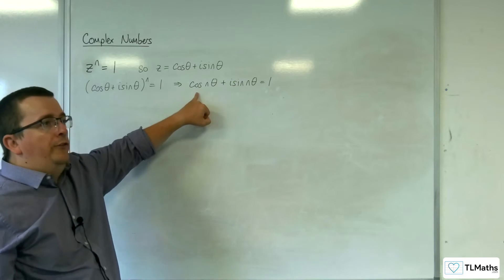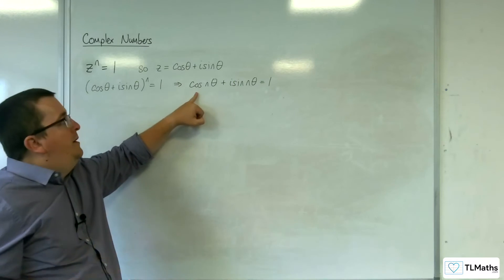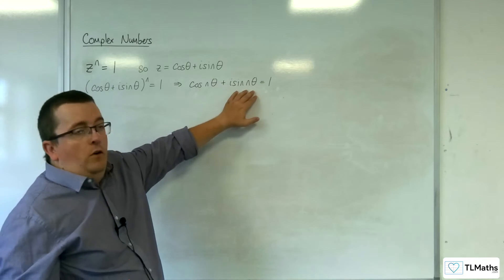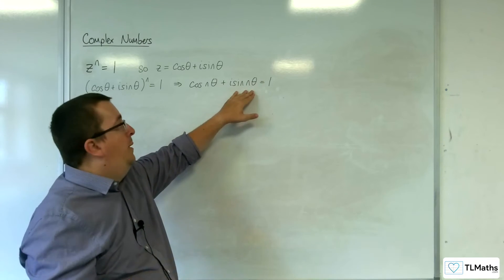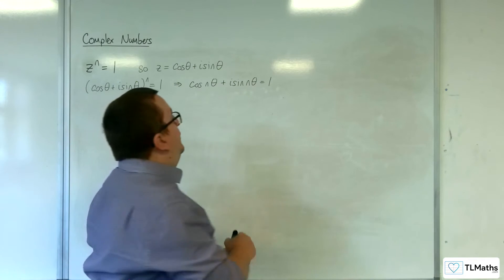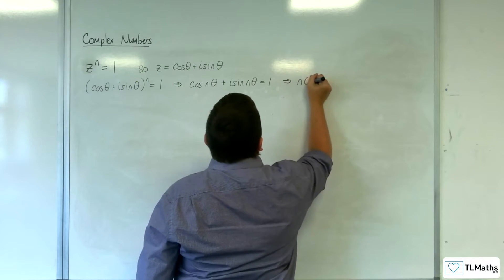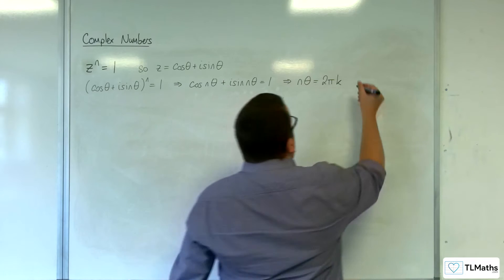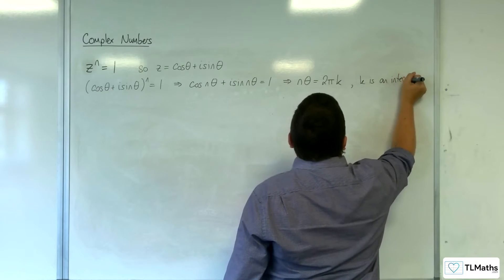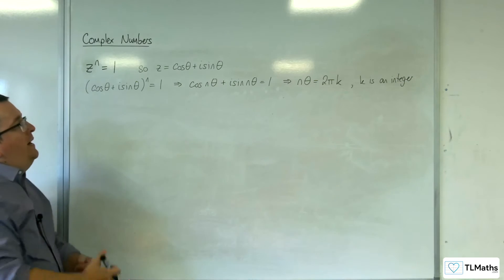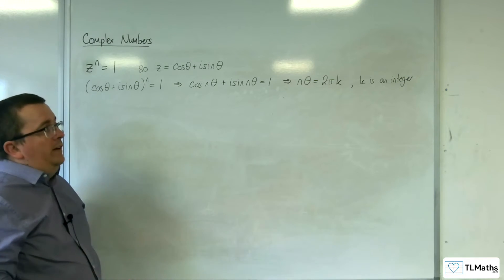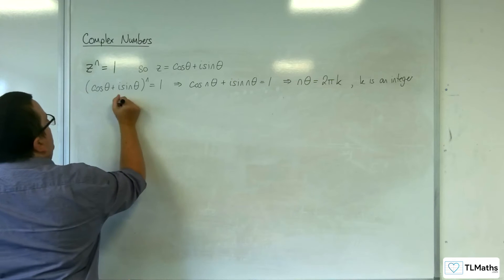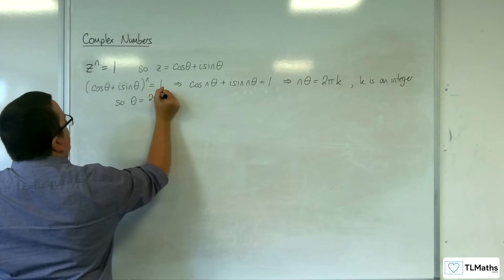In order for cosine n theta to be 1 and sine n theta to be 0, the angle must be some multiple of 2π. Because cosine of 0, or cosine 2π, 4π, 6π, 8π, or cosine minus 2π — they're all equal to 1. Sine of minus 2π, 0, 2π, 4π — they are all equal to 0. So this is going to happen when n theta equals some multiple of 2π, where k is an integer. Therefore theta must be equal to 2πk over n.